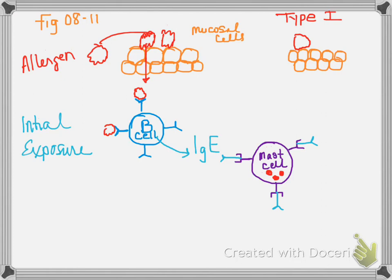So let's talk about re-exposure. So here is your allergen right here. And it is going to go through the mucosal cells. And what happens is that allergen is going to attach itself directly to the IgE on the mast cell. And what is going to happen is this mast cell is going to degranulate.